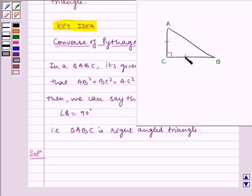It is given that AB square is equal to twice of AC square. That is, AB square is equal to AC square plus AC square.